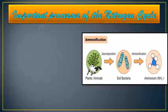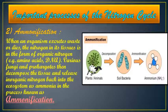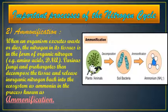The second process is ammonification. When an organism excretes waste or dies, the nitrogen in its tissues is in the form of organic nitrogen — for example, amino acids and DNA (deoxyribonucleic acid). Various fungi and prokaryotes such as bacteria decompose the tissue and release inorganic nitrogen back into the ecosystem as ammonia, in the process known as ammonification. After the death of plants and animals, bacteria decompose them and release ammonia back to the atmosphere.